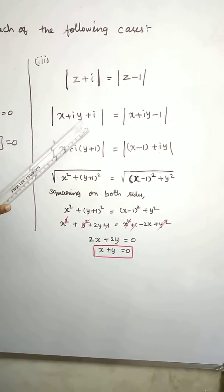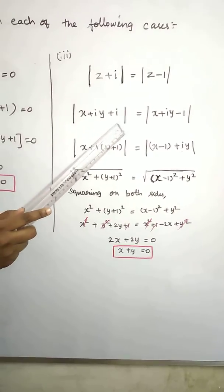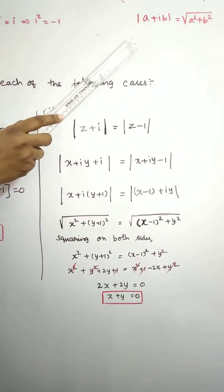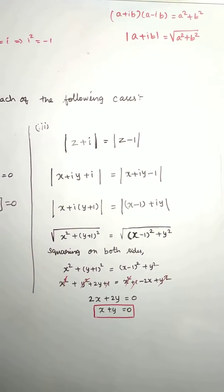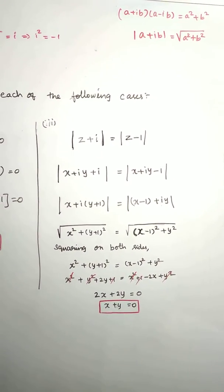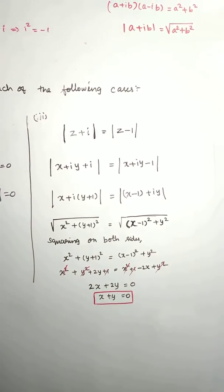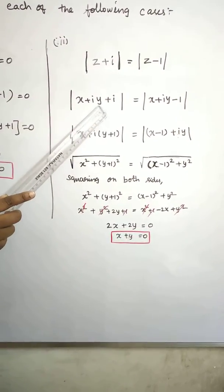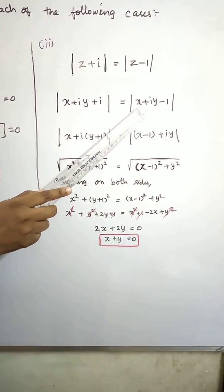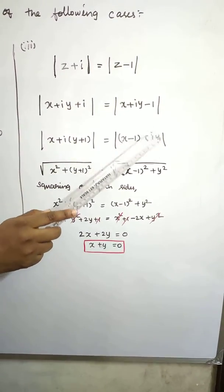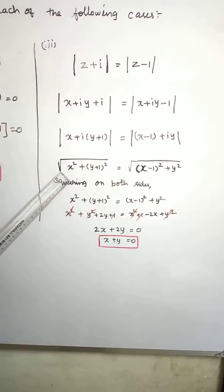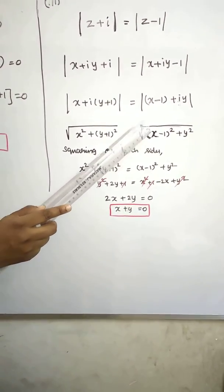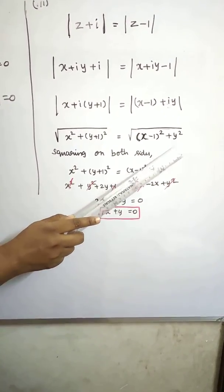Substitute z equals x plus iy. So modulus of x plus iy plus i equals modulus of x plus iy minus 1. Using the formula modulus of a plus ib equals square root of real part squared plus imaginary part squared, we get: square root of x minus 1 squared plus y squared equals square root of x minus 1 squared plus y squared.